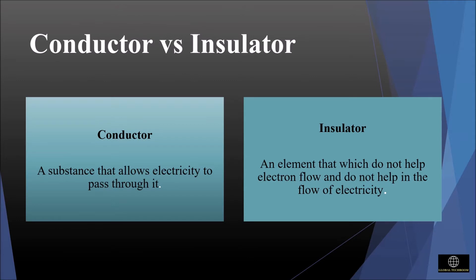Let us understand about the conductor and insulator. A conductor is a substance that allows electricity to pass through it. This helps in the electron flow so these are used to prepare wires. Examples: copper, gold, silver, etc.